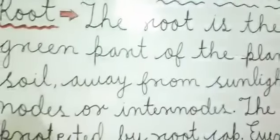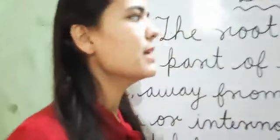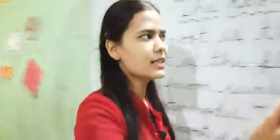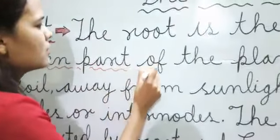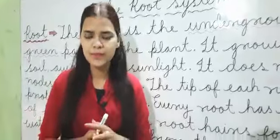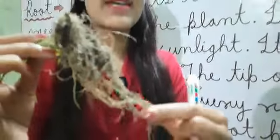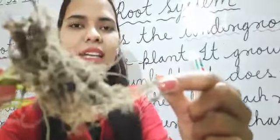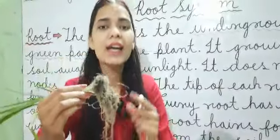The root is the underground, non-green part of the plant. Jaisa ke aapko bataya, yeh underground part hai, non-green part hota hai plant ka — non-green means jo green nahi hai. Kya aapko iska koi color dikhta hai? Nahi. So this is the underground and non-green part of the plant. Here I would like to show you the root. See, this is a root of a plant. As you can see, jo root hai, yeh non-green part hai — yeh green nahi hai, jabki jo plant hai wo green dikhaye de raha hai.